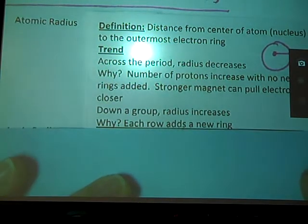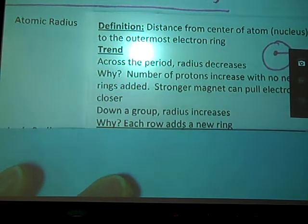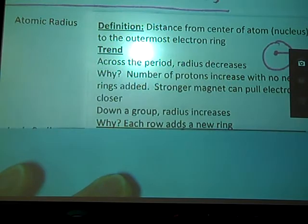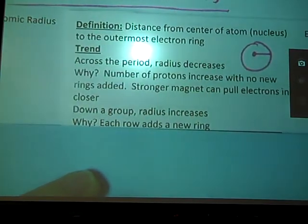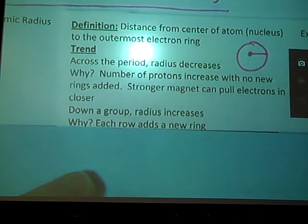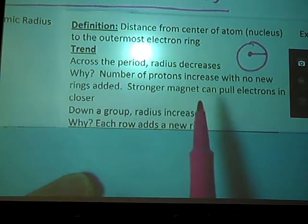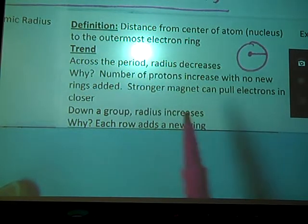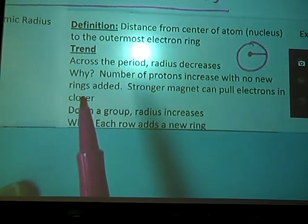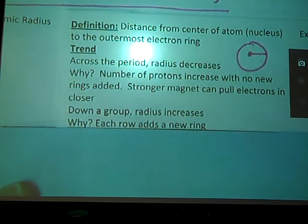The reason for that, remember we said in the last video that anytime I go across the period my reason for anything is bigger magnet, more protons. So same thing here. The number of protons increases with no new rings being added. My stronger magnet can pull my electrons in closer. So even though there might be more electrons, there's still not any further distance.